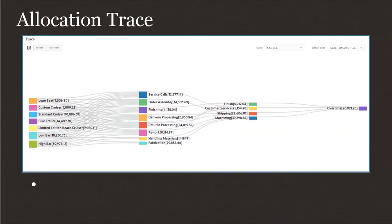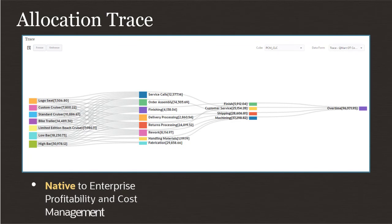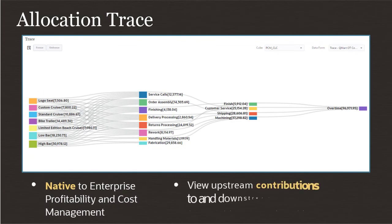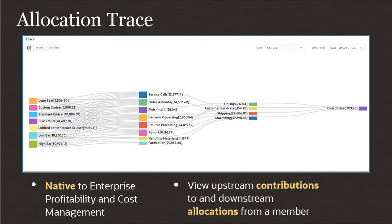The Allocation Trace tool in Enterprise Profitability and Cost Management lets you follow the results of an allocation and see both upstream contributions to and downstream allocations from a member.